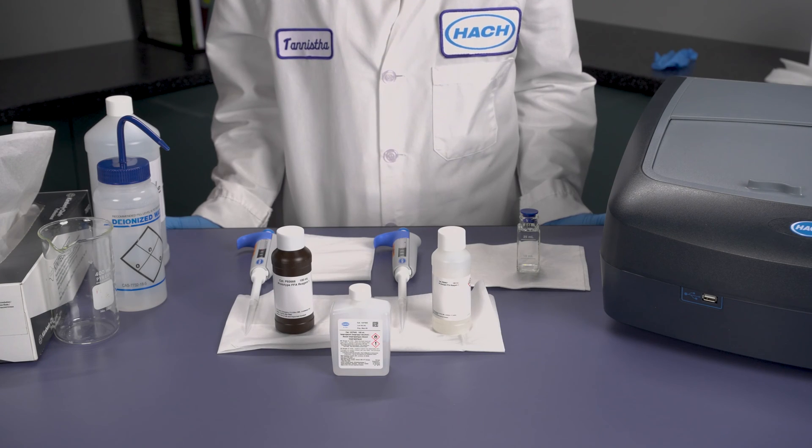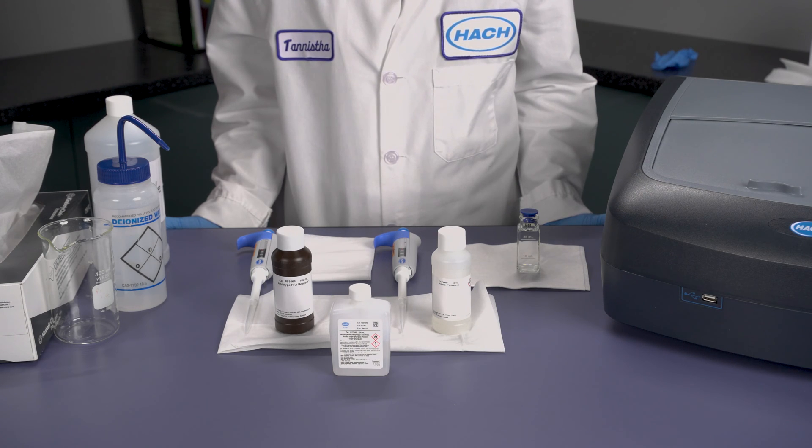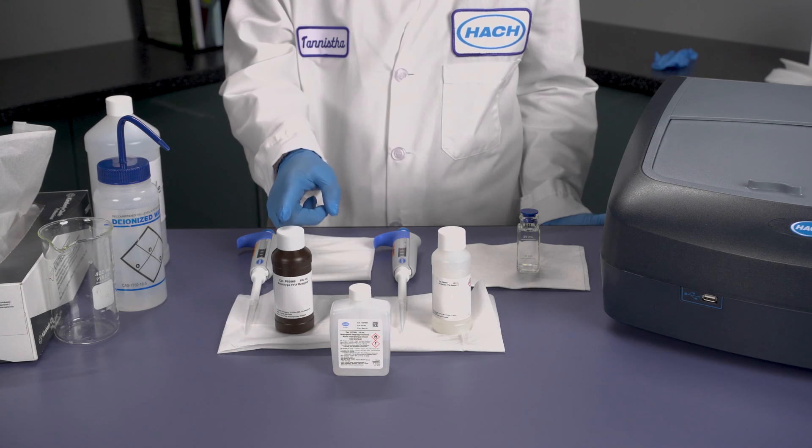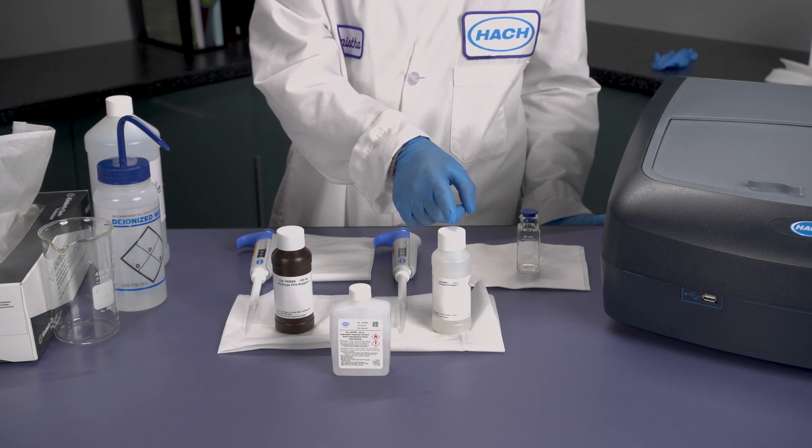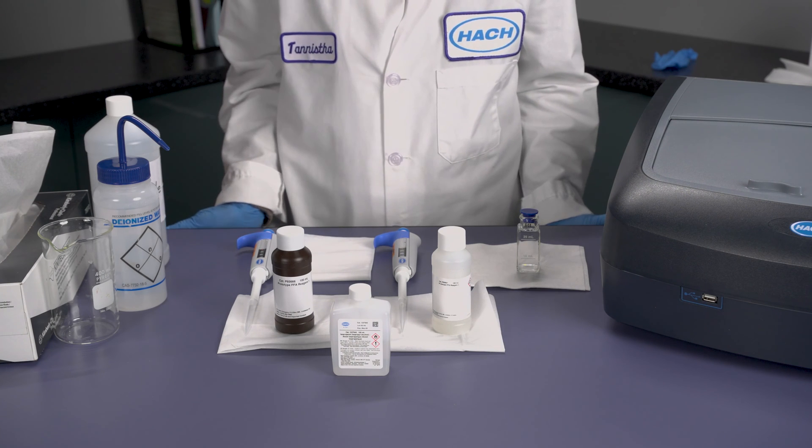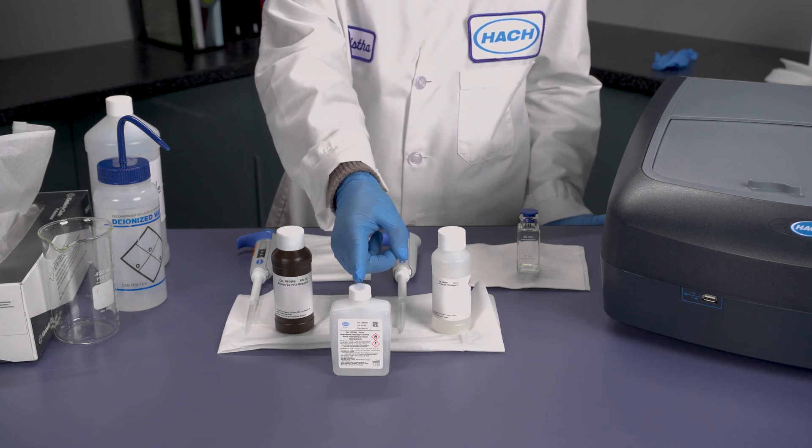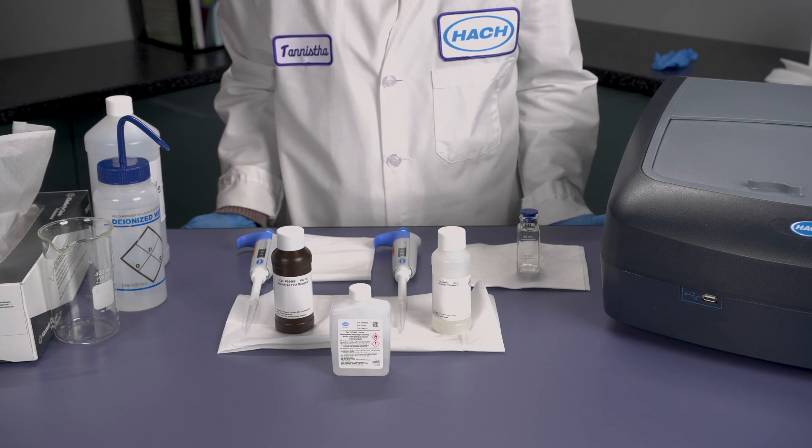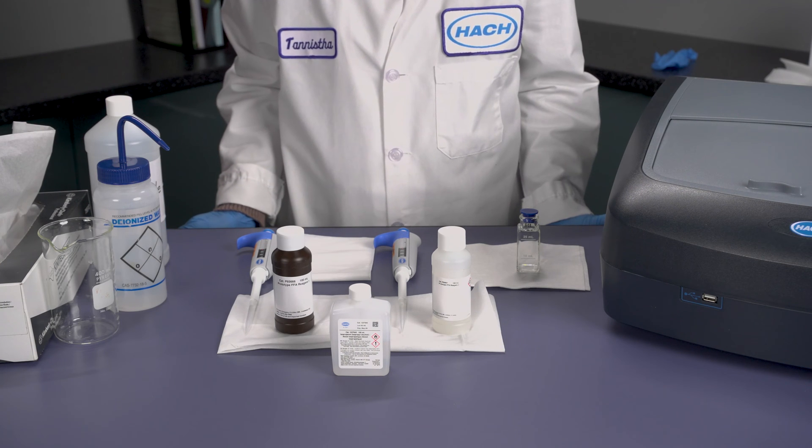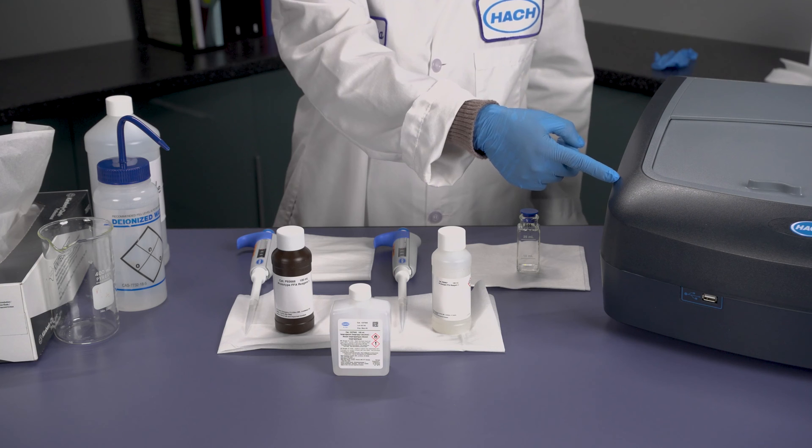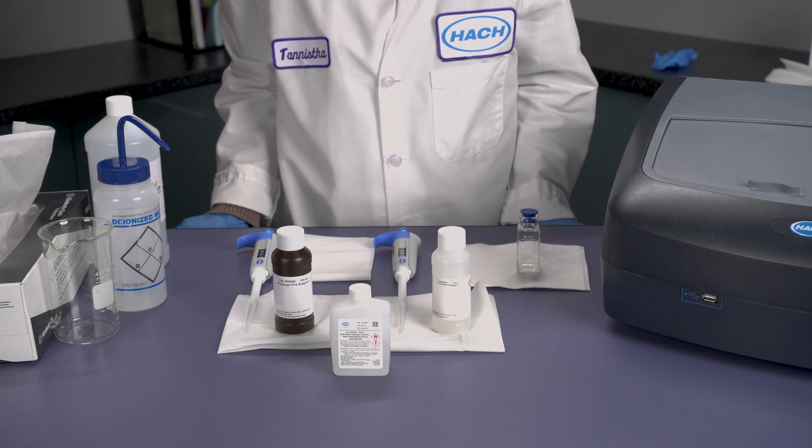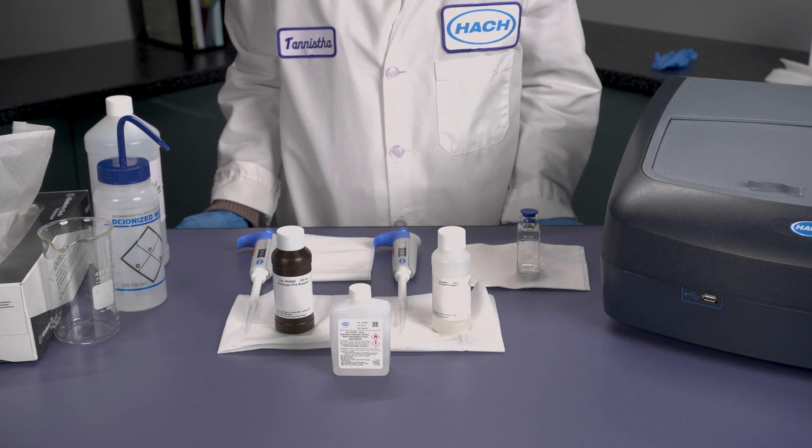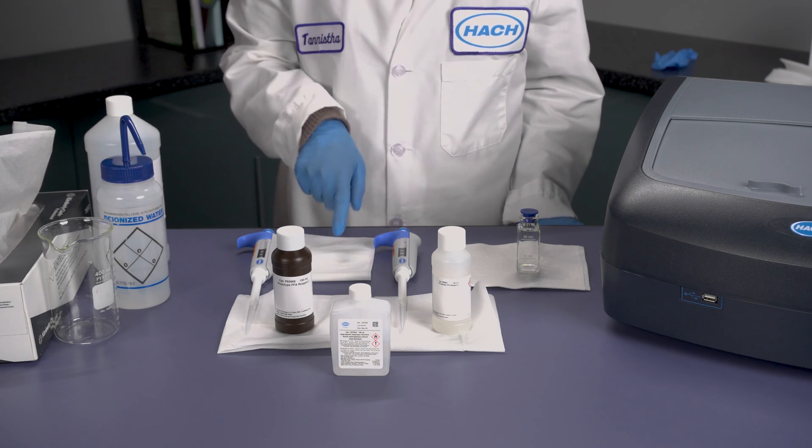Let's discuss the labware, apparatus, and reagents utilized in this method. There are two reagents that are used for the test: film forming amine 1 and film forming amine 2. However, there's also the isopropyl alcohol solution that is used to clean the sample cells between tests. You also need a spectrophotometer. We recommend a DR6000 spectrophotometer from Hach or the DR3900. In addition, you will need deionized water and chem wipes for cleaning the sample cell.